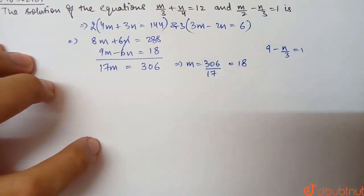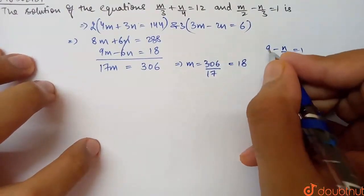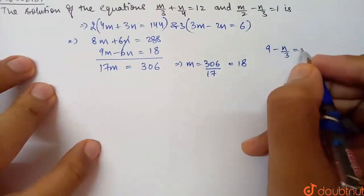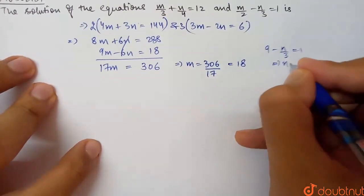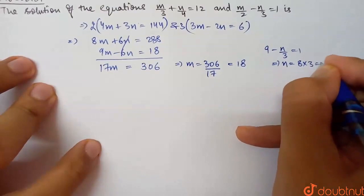Rearranging, 9 - 1 = 8 = n/3. Multiplying both sides by 3, we get n = 8 × 3 = 24.